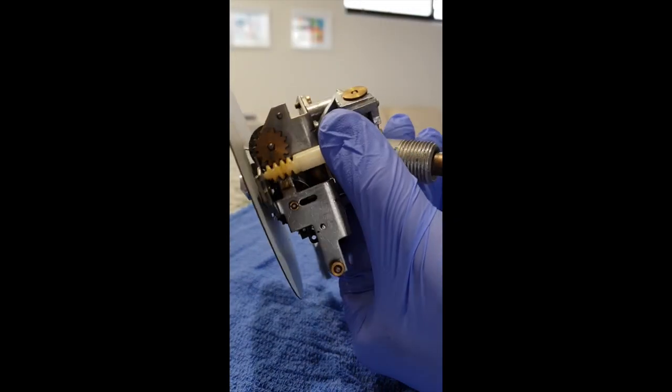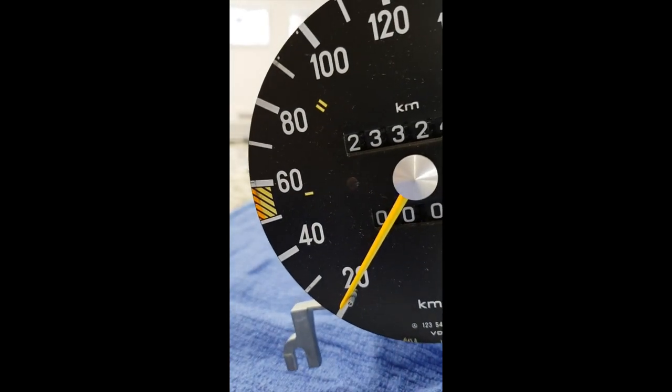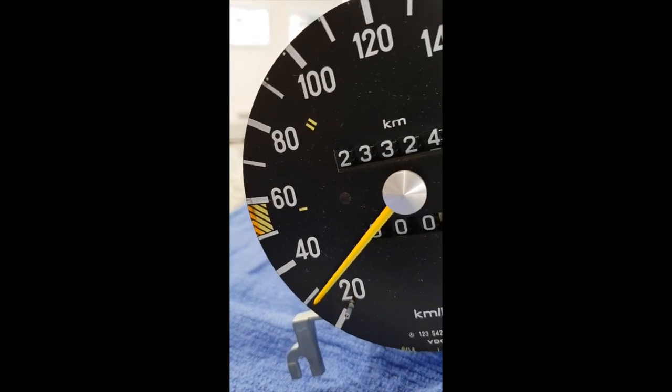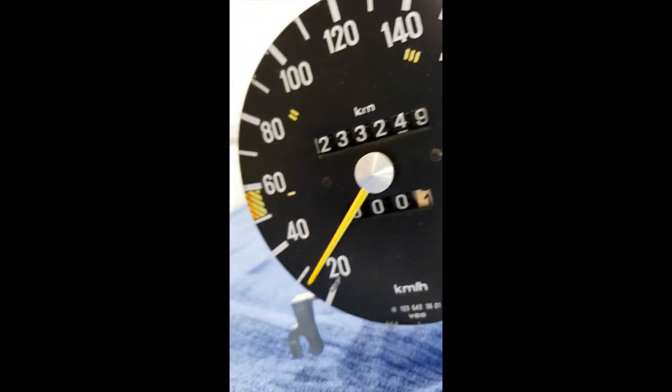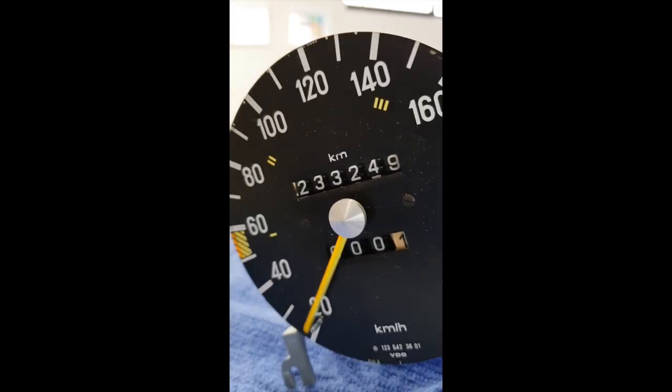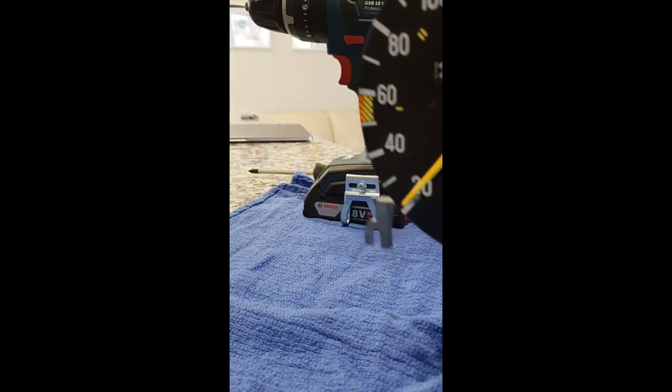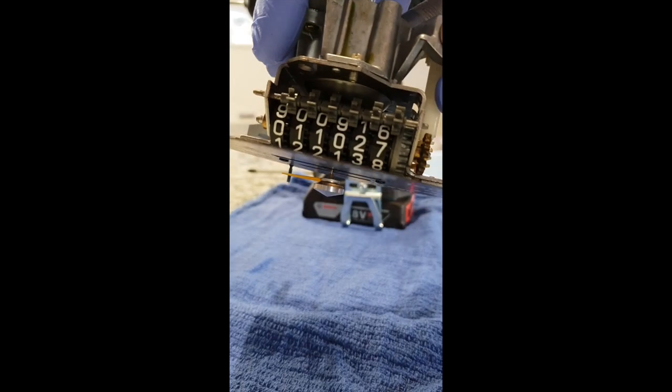This is the odometer out of my 280TE which wasn't working from the overall counter or the short trip counter. You can see I'm putting a drill in there in the back just with a tile cutting head to spin the odometer. You can see the speedo works but the counters don't actually work.